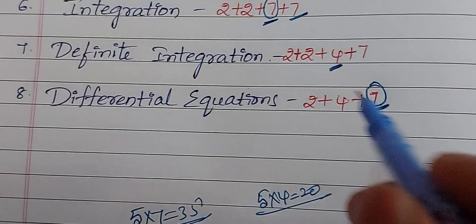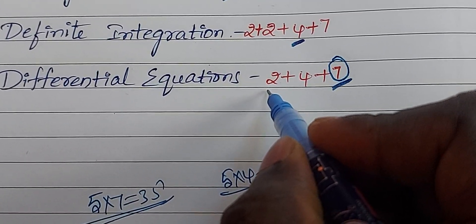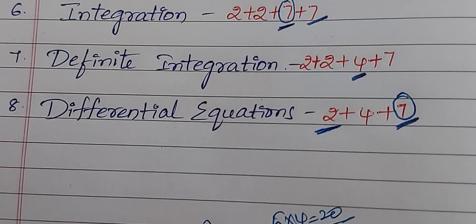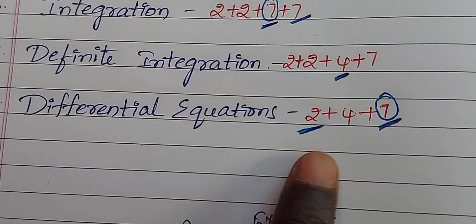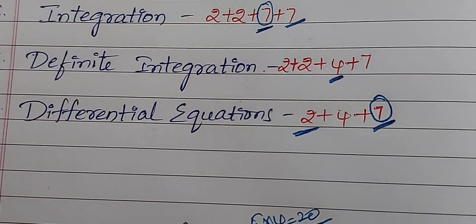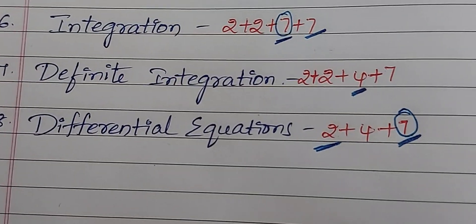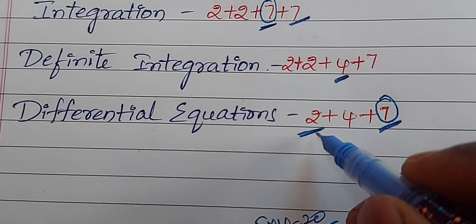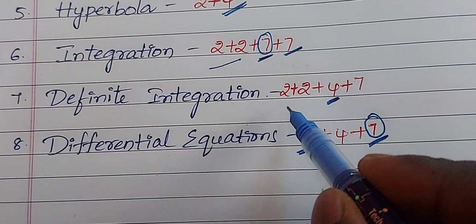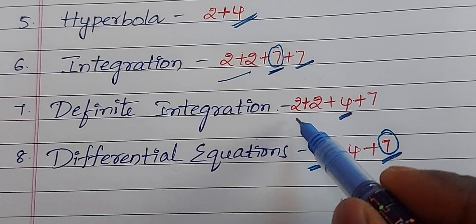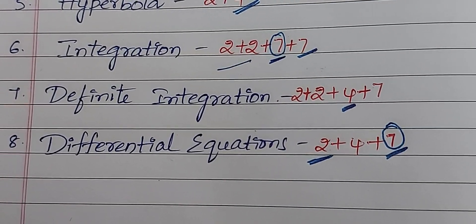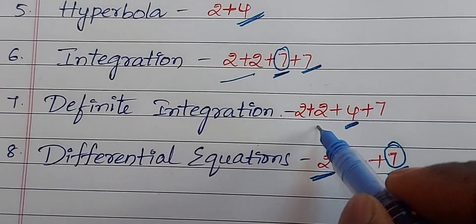Two-mark question: Differential equation — confirm question is order and degree. Compulsory question. So order and degree: two lines answer. This is polynomial equation form — one way to check. You need degree — that's why. Next, integration is compulsory. Next, Definite integration two-mark question: the problem is ∫₀² (1/6) dx — this model is compulsory.